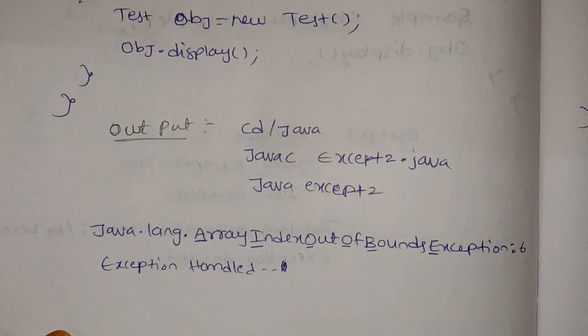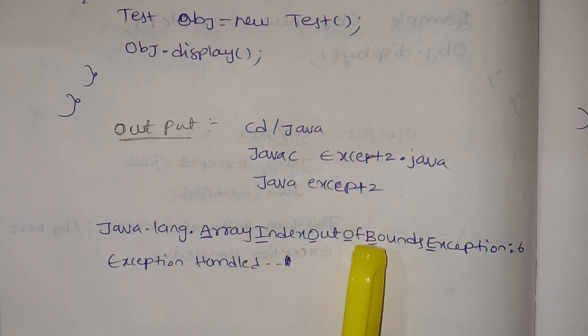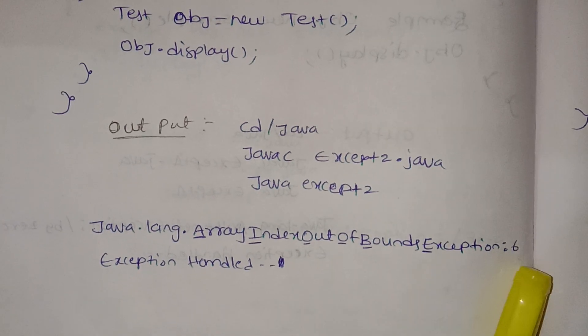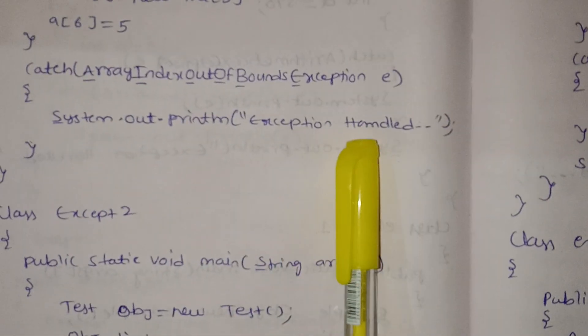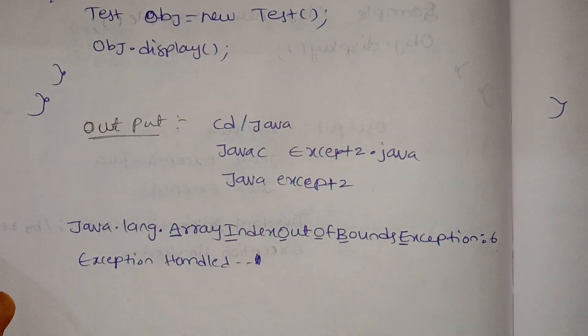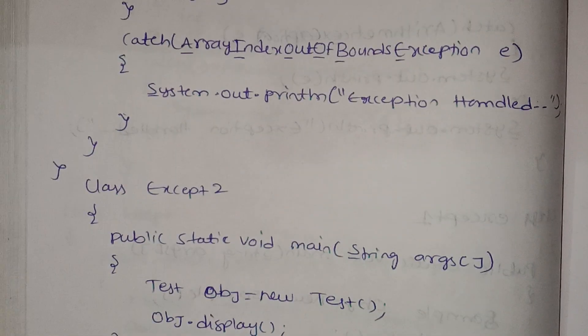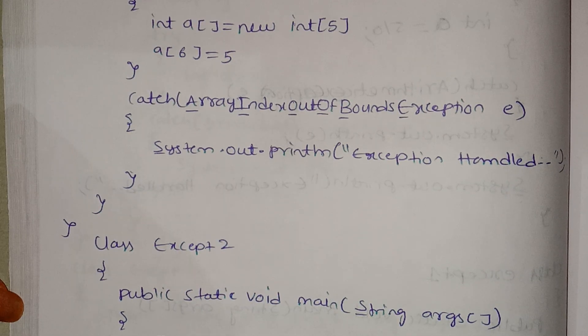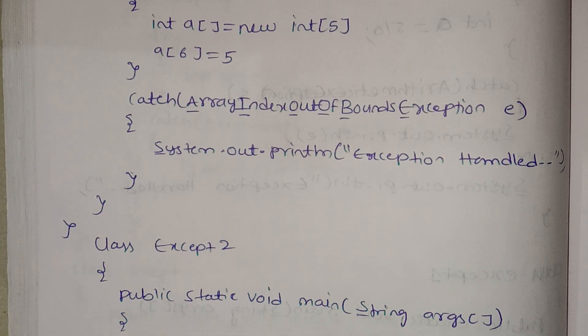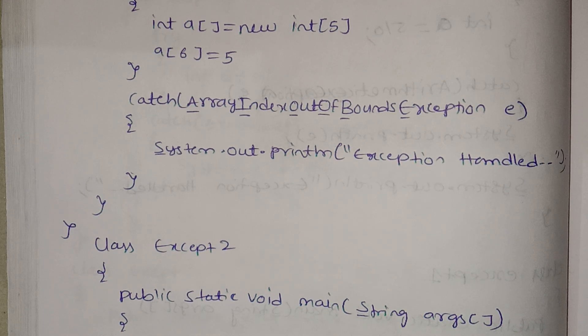Here we have java.lang.ArrayIndexOutOfBoundsException, and 6 is the out-of-bounds index. The exception is handled and we print the exception. Thank you guys. I hope you found this helpful — please subscribe to my channel. If you have any queries, check the book. I will upload the PDFs. Thank you.